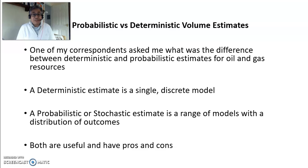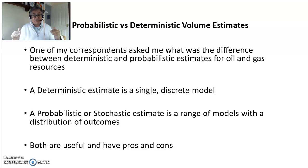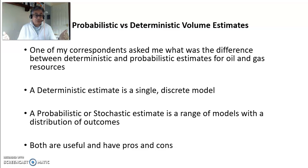Now there are two things here. A deterministic estimate is a single discrete model — one shot, a single answer. You can vary the parameters to make several deterministic estimates, but it's still a discrete single answer. Whereas a stochastic estimate is a range of models with a distribution of outcomes. You put several different inputs in and it gives you an idea of where a result would be on a distribution in order to make better decisions.